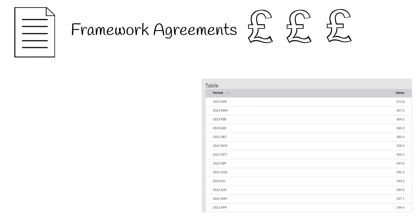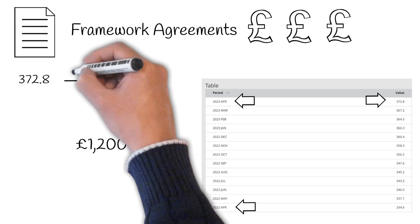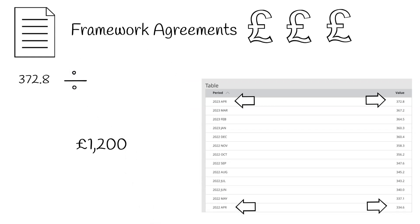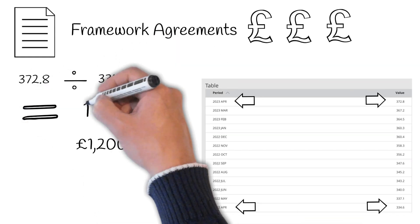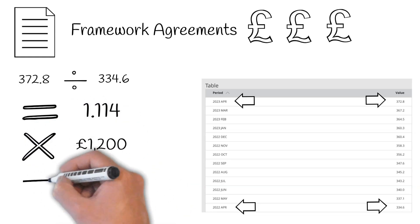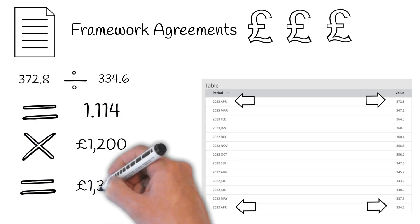Here's an example of how this works. The following table lists the Retail Price Index from April 2022 to April 2023. Let's assume we have a schedule of rate item for £1,200. The contract commenced on April 2022, and we need to calculate the revised rate for the new contract year. To do this, we take the index at April 2023 — which is 372.8 — and divide it by the index at the start of the contract, 334.6. We then multiply the result by the original rate to give us our inflation-adjusted rate of £1,337.